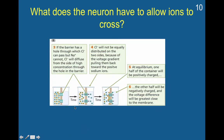Here's an example: if this barrier has a hole through which chloride ions can pass but sodium ions cannot, then the chloride will diffuse from the side of high concentration through the hole in the barrier and spread out as much as possible. Because of the concentration gradient, these chloride ions will want to pass to the other side. But the chloride will not be equally distributed on the two sides because of the voltage gradient.